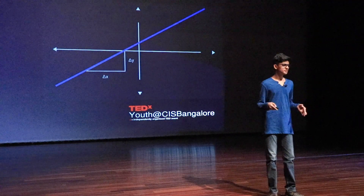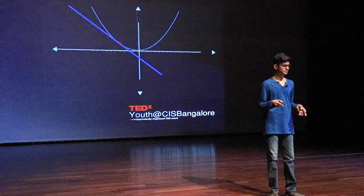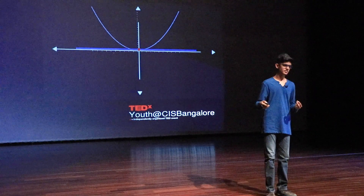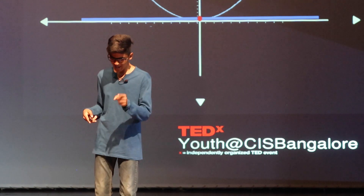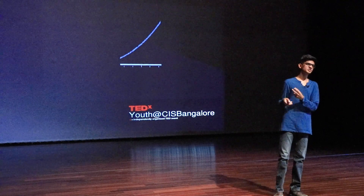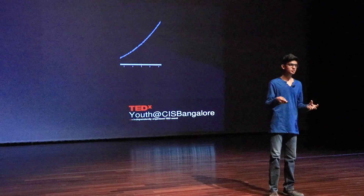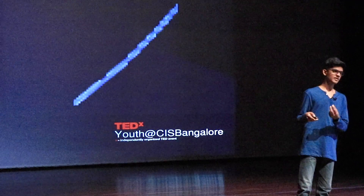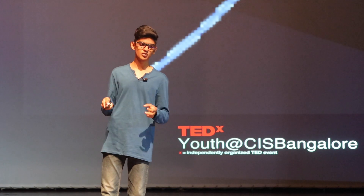But when you get to curves, things change a little bit — the slope keeps changing. So how can we find the value of a slope at any given point? I'd like you to think about what happens as you zoom in to the graph. You can see that the line is slightly straighter than what it was before. And the more you zoom in, the straighter the line gets, and the easier it is to calculate the value of the slope. The straighter the line gets, the more accurate your value of the slope becomes.